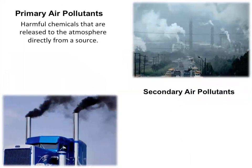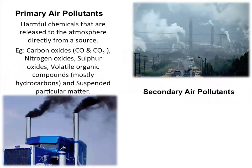Primary pollutants are harmful chemicals that enter the atmosphere directly from the source. Carbon oxides, oxides of nitrogen, sulfur, and many volatile organic compounds (VOCs) in the form of hydrocarbons and suspended particulate matter are examples of primary air pollutants. VOCs are compounds that easily become vapors or gases. These are released from burning fuels such as gasoline, wood, coal, or natural gas.